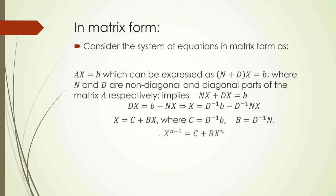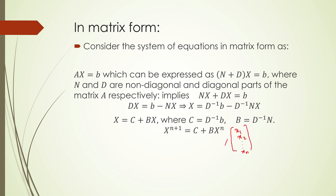We start the iterations: the (n+1)-th iterate X^(n+1) can be found using the previous iterate X^n. Capital X here represents all variables x1, x2, x3 in a column matrix. It is a short notation for that column vector, which we denote X^n.